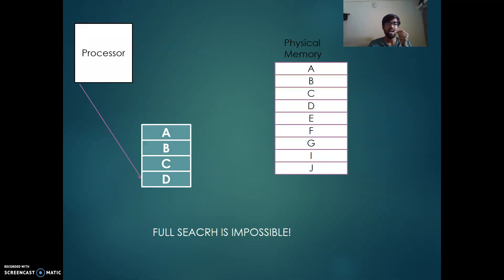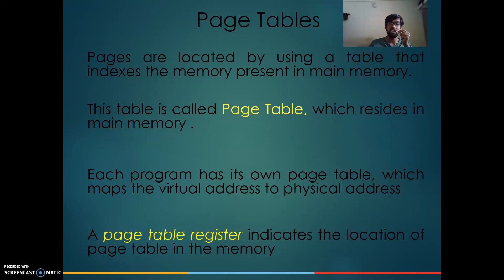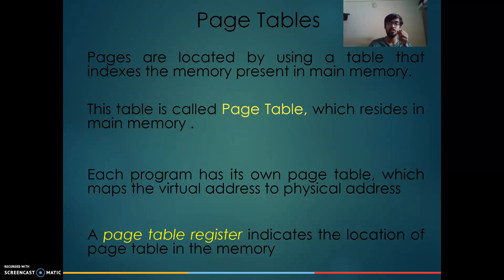If the processor wants to access certain data, it uses fully associative cache, meaning there are no sets and it has to search the entire physical memory to find a particular page, which is impossible. The solution is a page table. The page table acts as a dictionary between the pages and their physical address numbers in the physical memory. Before going directly to the page memory, it first looks up the page table to find at which location the corresponding page is present, and then fetches it from primary memory. The page table is present in the physical memory, every process has its own page table, and a page table register is used to map that particular memory.